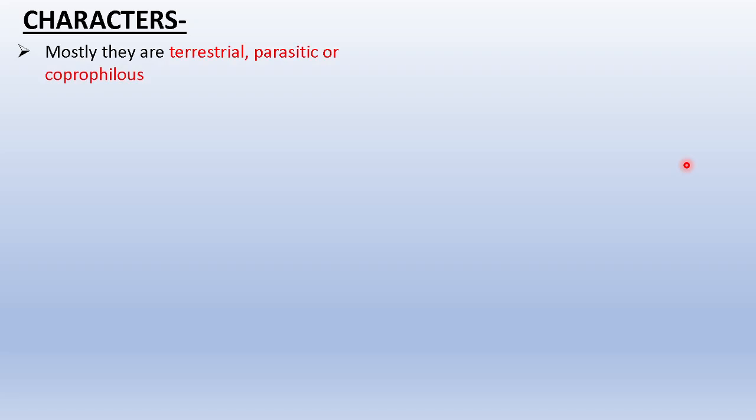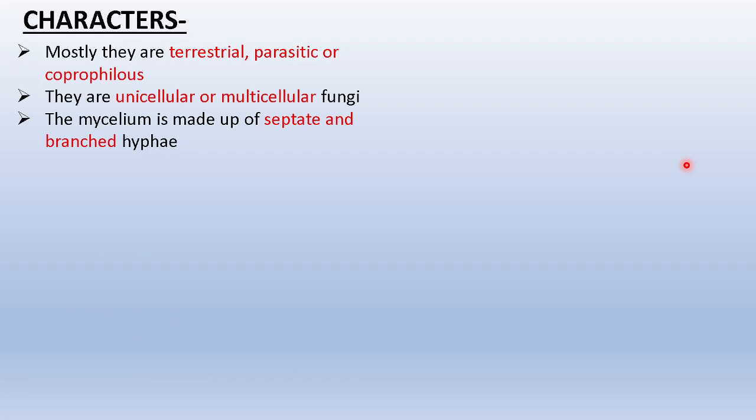The defining characters: mostly they are terrestrial, parasitic, or coprophilous. Terrestrial means upon the land; parasitic means growing upon other living organisms; coprophilous means growing upon cow dung, which also contains fermented material. They are unicellular or multicellular — and here is an exception, because unicellular forms are found in this particular class, Ascomycetes.